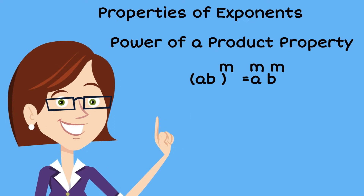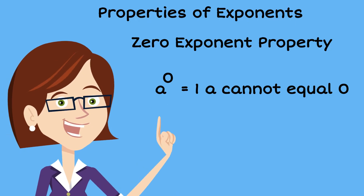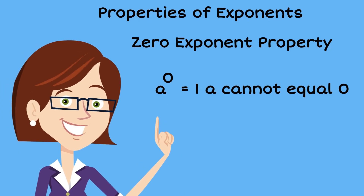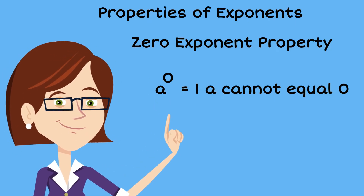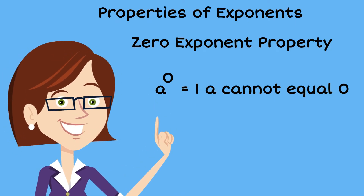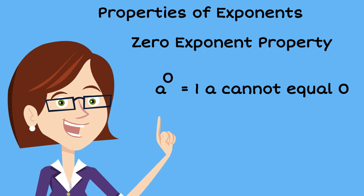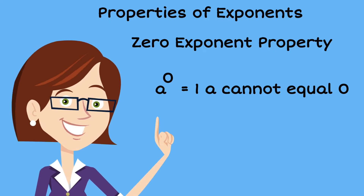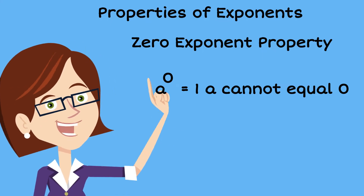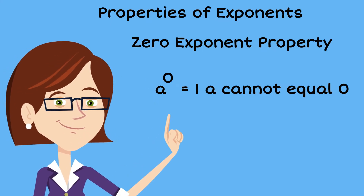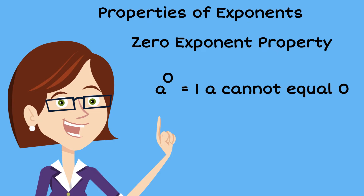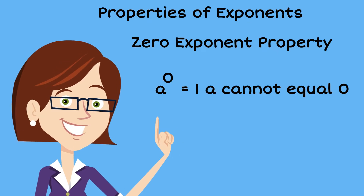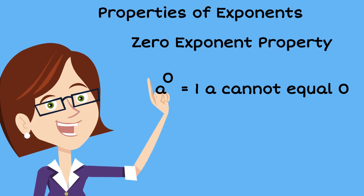The fourth property would be called the zero exponent property. That's when a base a is raised to the zero power. That is always equal to one, as long as a is not zero.